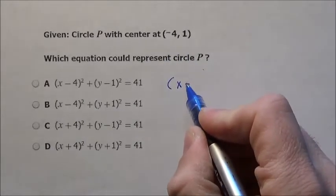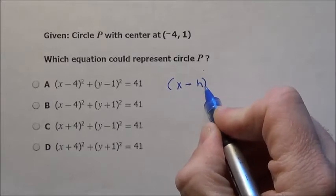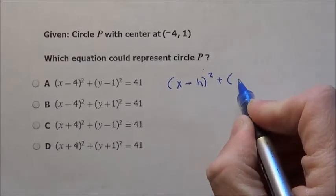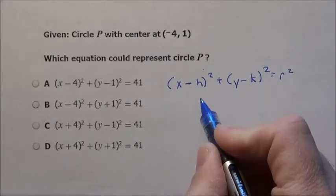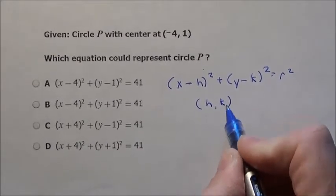If you remember the way the formula goes, it says x minus h squared plus y minus k squared equals your radius squared. So h and k are your center.